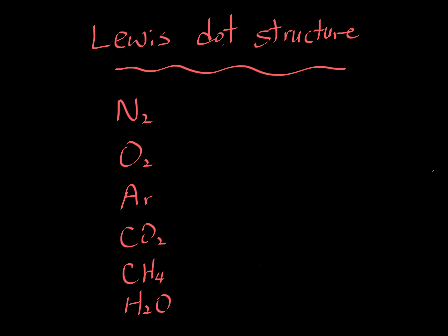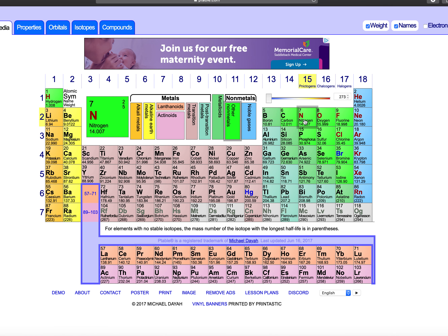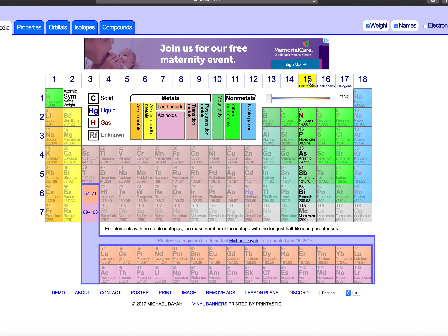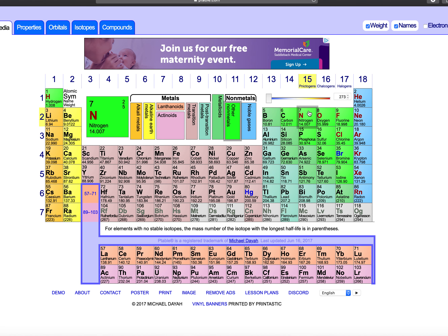Here are the rules. In order to draw a Lewis dot structure, you have to figure out the total number of valence electrons. Valence electrons are the outermost electrons. For example, nitrogen — when you look at the periodic table, it's in group five. All these nitrogen, phosphorus, and so on are in group five. Group five atoms have five valence electrons.